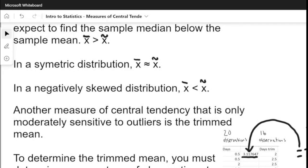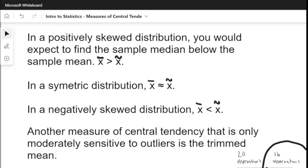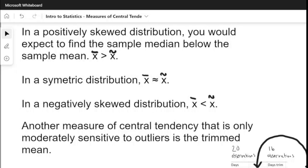In a positively skewed distribution, which has a longer upper tail and a shorter lower tail, you would expect to find the sample median below the sample mean. This is because the sample mean is being influenced by higher observation numbers and the sample median is simply showing where the middle of the data is.